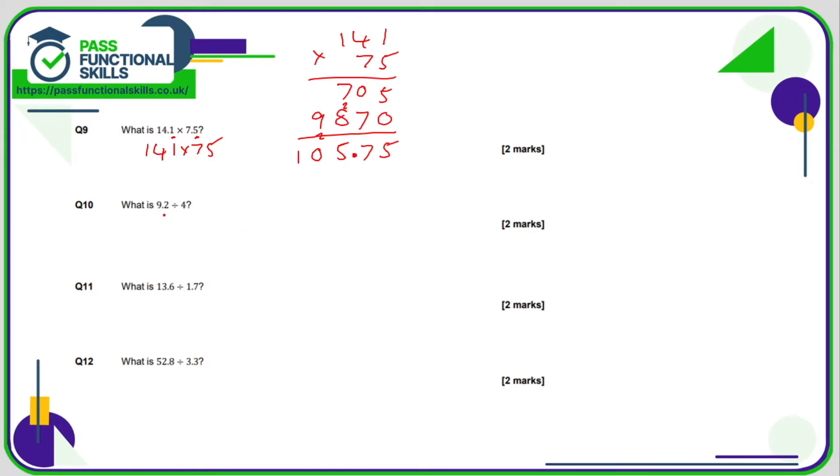Question 10. 9.2 divided by 4. This question is no more difficult than 92 divided by 4. So we need to do a bus stop method. So how many 4s go into 9.2? The only thing we need to remember is just put a decimal point above. Done. And now it is literally exactly the same as how many 4s go into 92. How many 4s go into 9? Well, that's 2 with a remainder of 1. How many 4s go into 12? 3. So the answer is 2.3. Easy.